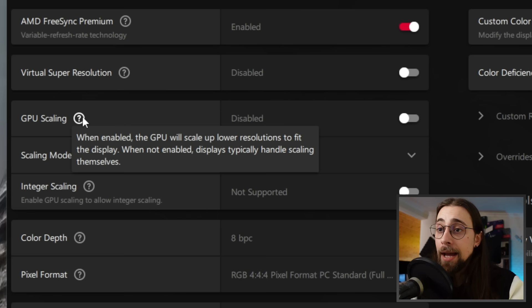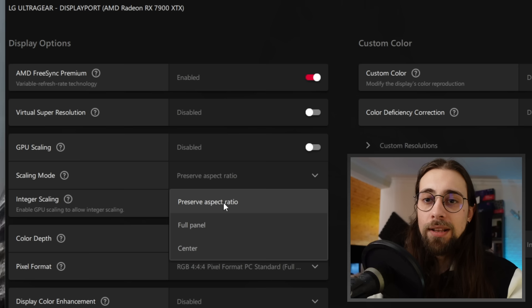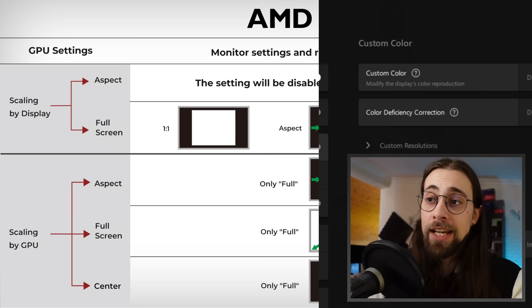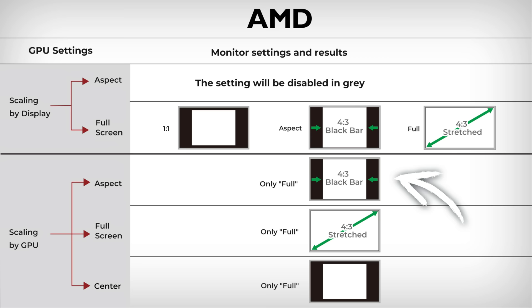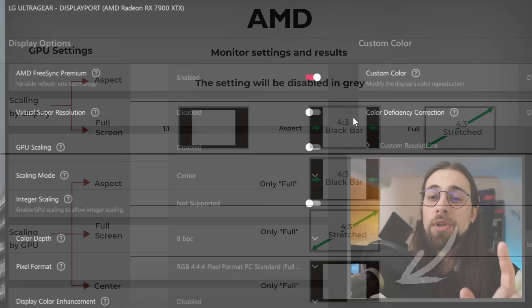GPU Scaling: when enabled, the GPU scales up lower resolutions to fit the display. You can choose Preserve Aspect Ratio — which shows black bars on the sides — Full Panel, which stretches the resolution to fill the panel, or Center, which places the image centered with black bars on all four sides. For example, playing 1080p on a 1440p ultrawide with Center enabled will show black bars all around.